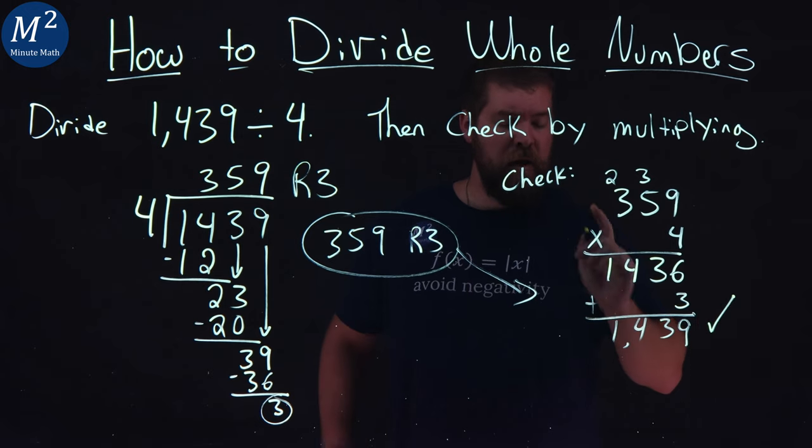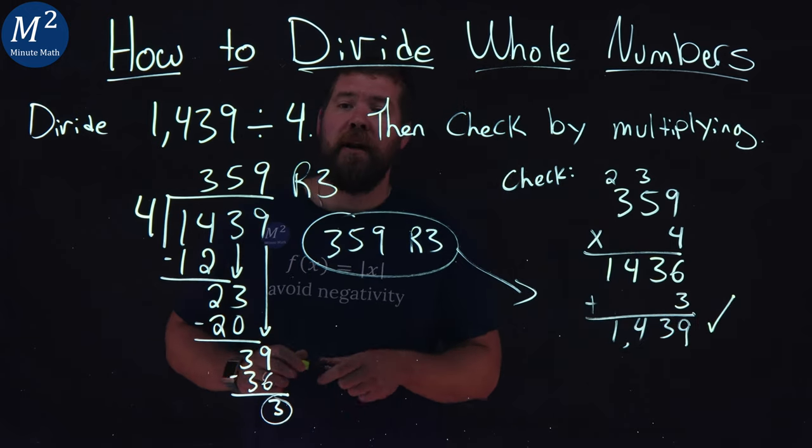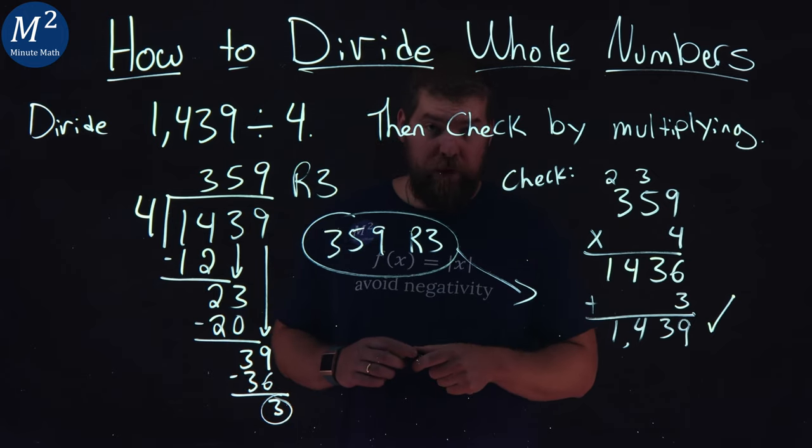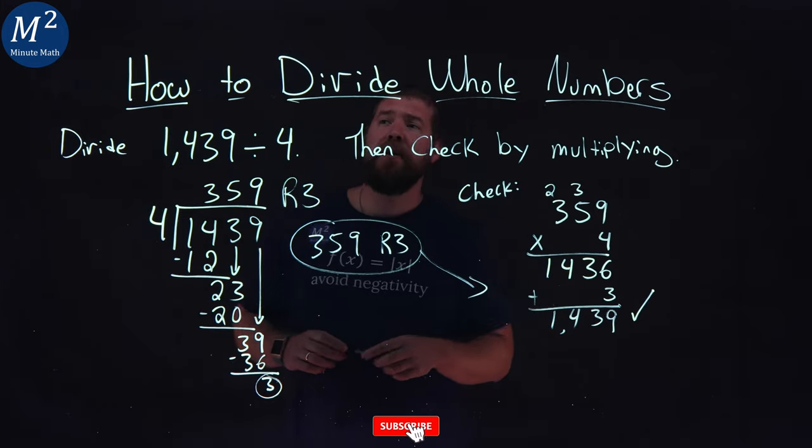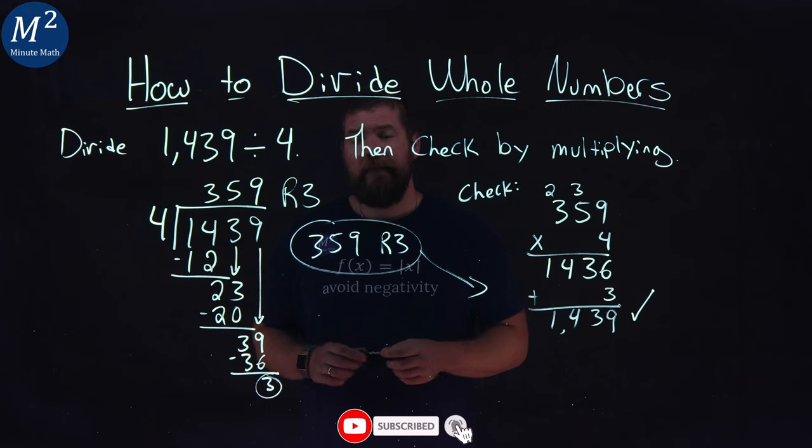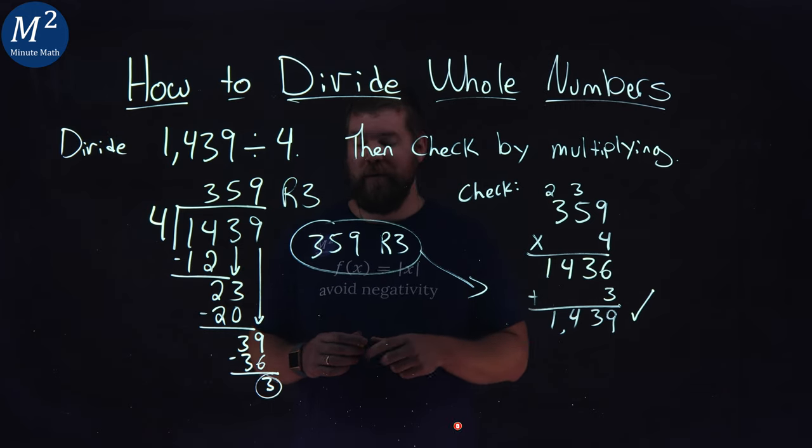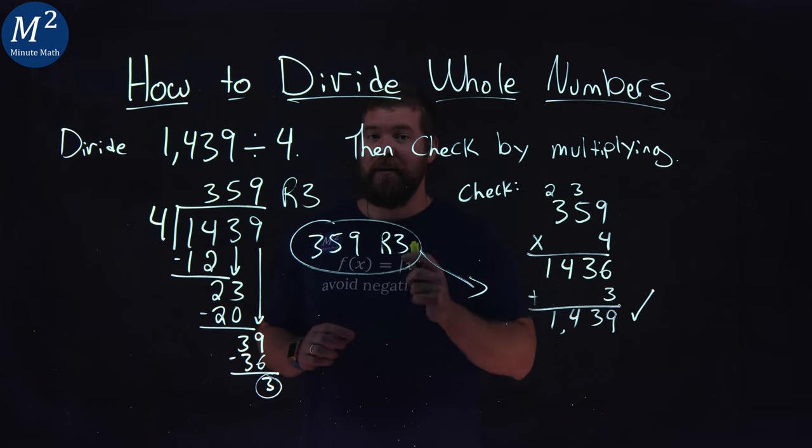So again, 1,439 divided by 4 is 359 with a remainder of 3. I hope you learned something here on how to divide whole numbers. If you did, make sure you subscribe to this YouTube channel and like this video. This helps us make more of these free math lessons for you and for everyone else. So as always, thanks for watching.